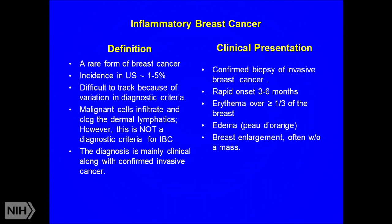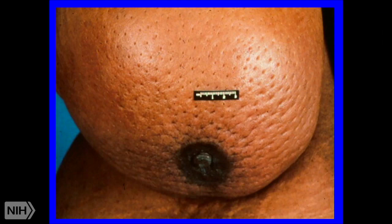Malignant cells infiltrate and clog the dermal lymphatics, though dermal lymphatic invasion is not itself a diagnostic criterion — it can be seen in any breast cancer. The diagnosis is based on clinical presentation confirmed by biopsy. Patients with inflammatory breast cancer present with rapid onset of changes over three to six months: erythema covering at least a third of the breast, edema giving the skin a peau d'orange appearance, and breast enlargement, usually without a palpable mass.